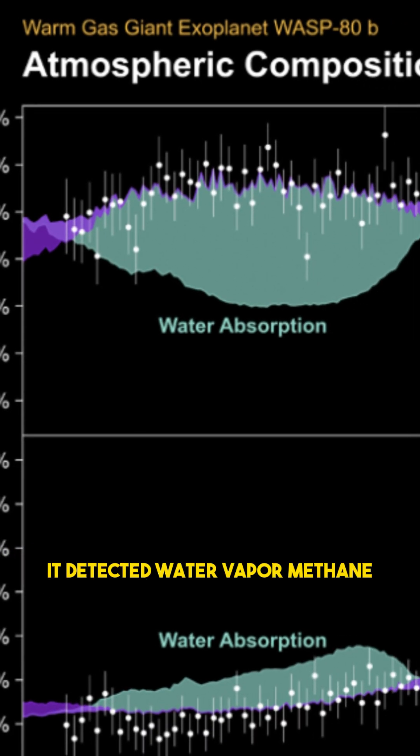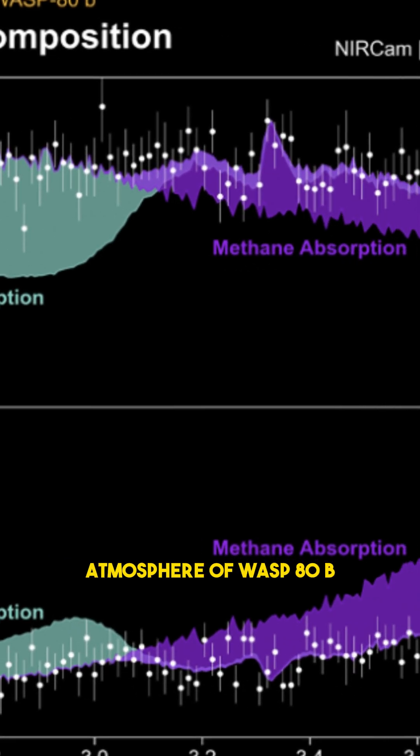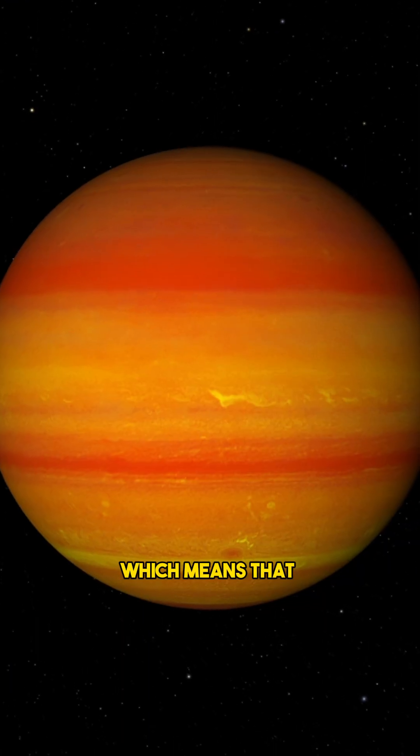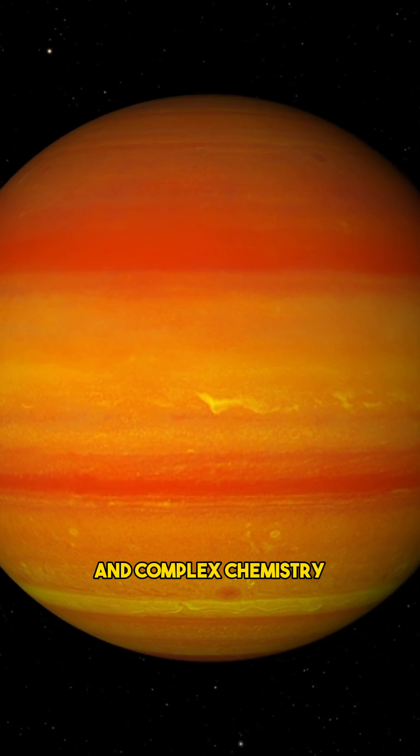It detected water vapor, methane, and carbon dioxide in the atmosphere of WASP-80b, which means that the planet has a rich and complex chemistry.